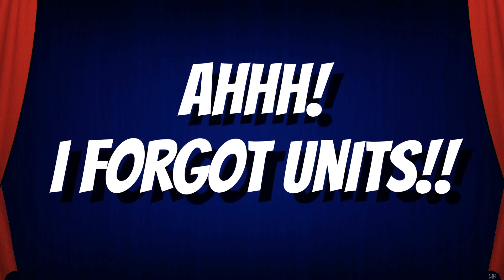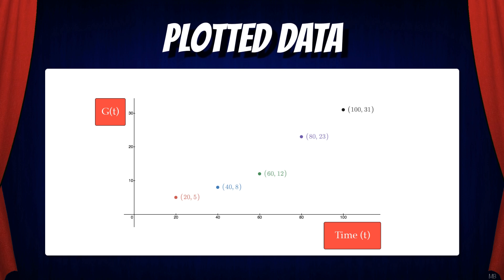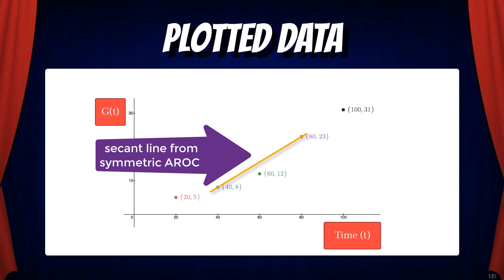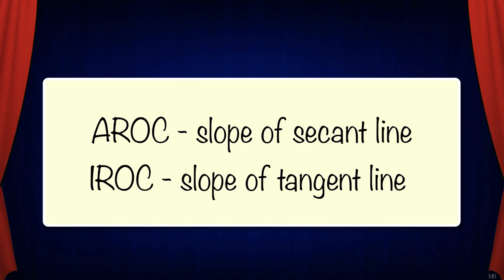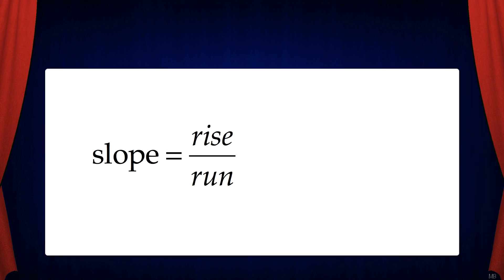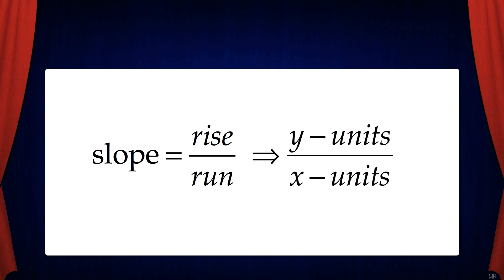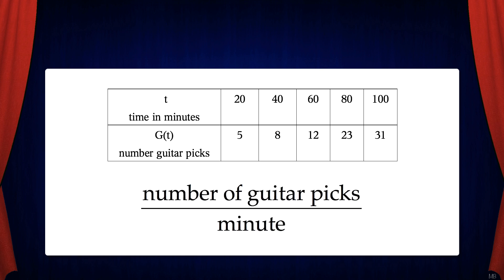So let's see how we can figure out the units. I've taken the data from the table and plotted the points on a graph. We can see that our y-axis is g of t and our x-axis is time. Our goal was to estimate the instantaneous rate of change at t equals 60, so we're doing that by finding various slopes of secant lines. The AROC or average rate of change is the slope of a secant line, and the IROC or instantaneous rate of change is the slope of a tangent line. Since slope is rise over run, this corresponds to y units divided by x units — in our case, g of t divided by t, or number of guitar picks per minute.